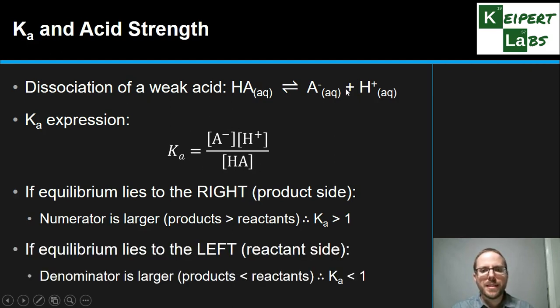Whereas if our equilibrium lies to the left, that is we've mostly just got undissociated HA, then our denominator is larger than our numerator and so our Ka will be less than one. So we can see that at a value of one, we have this tipping point of do we have more products or more reactants present in that equilibrium? And so the size of the number that we get tells us a lot about that equilibrium.